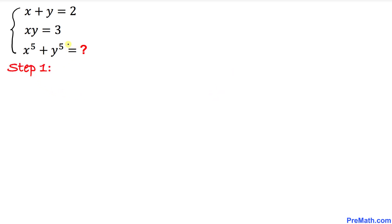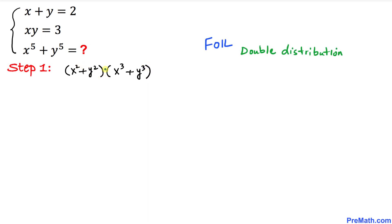Here's our very first step. Since we are looking for the value of x power 5 plus y power 5, we are going to manipulate the process this way: write x square plus y square, then times x power 3 plus y power 3. Now let's go ahead and expand these two binomials using double distribution.